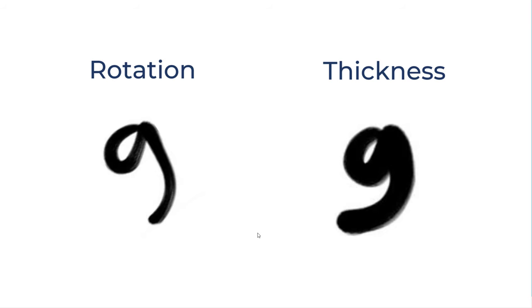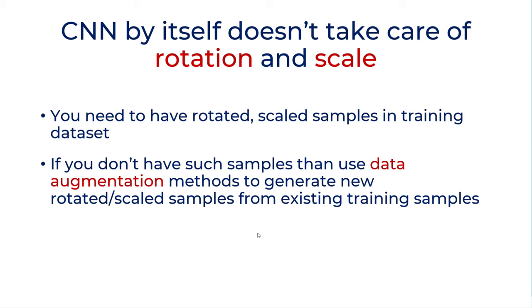How about rotation and thickness? Because by itself, CNN cannot handle the rotation and the thickness. So you need to have training samples which have some rotated and scaled sample, some thick samples, some thin samples. And if you don't, you can use data augmentation technique. What is data augmentation? Let's say for handwritten digits, you take your original data set and then you pick few samples and then you rotate them manually. Or you make them larger or you make them smaller, thicker or thinner and you generate new samples. By doing that, you can handle rotation and scale in convolutional neural network.